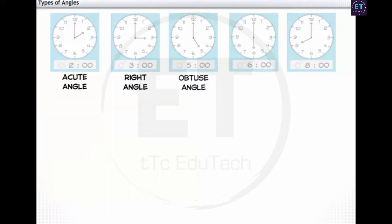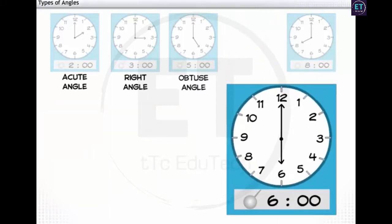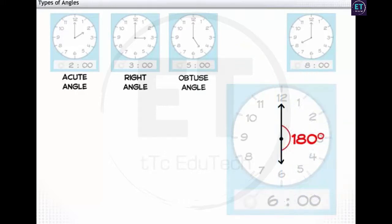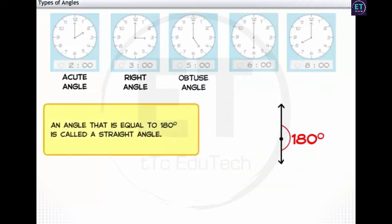Now, let's see what angle is formed at 6 o'clock. This angle is equal to 180 degrees. An angle that is equal to 180 degrees is called a straight angle.